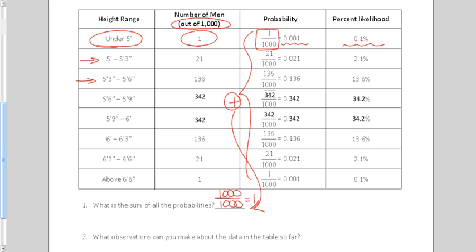So the probability that you're on this chart, if you're a man, a hundred percent, the probability is one. Everybody's included. What observations can we make about the data in the table so far? Well, what looks like it's average?